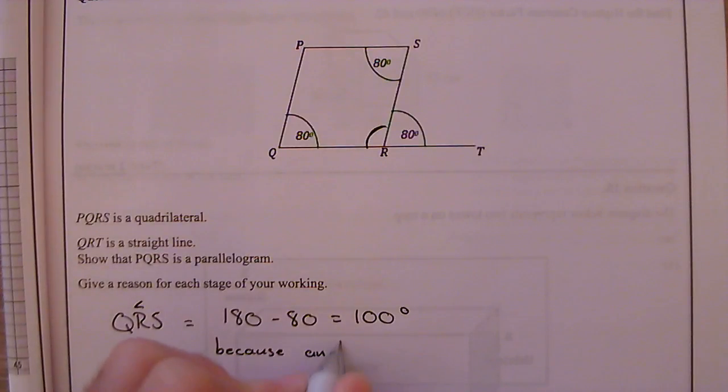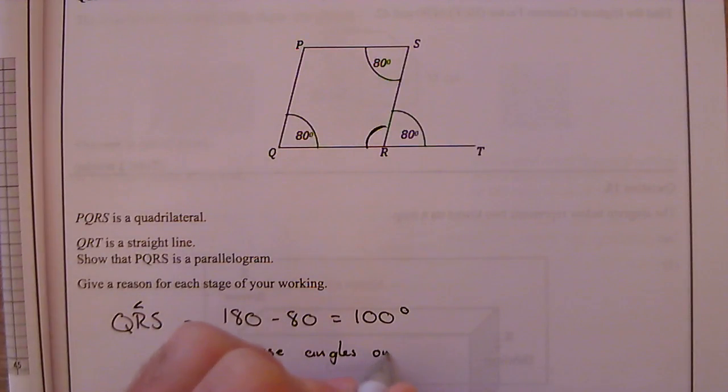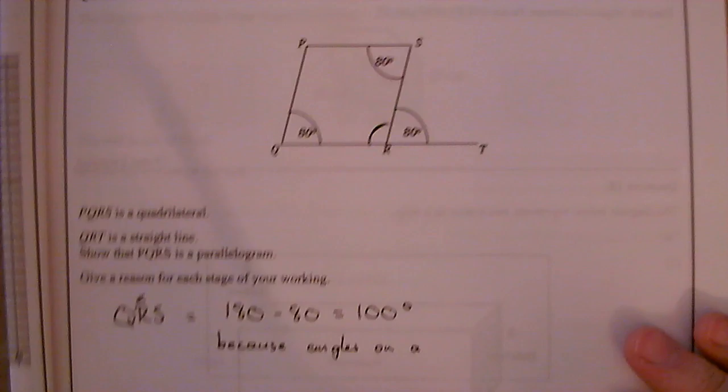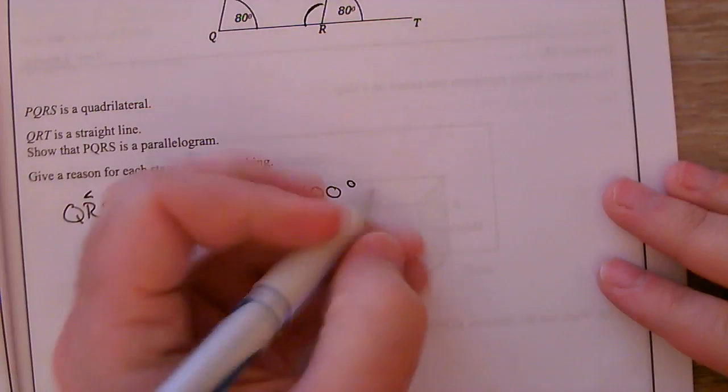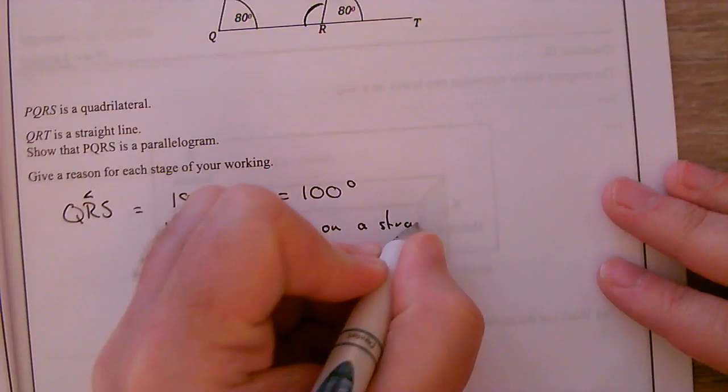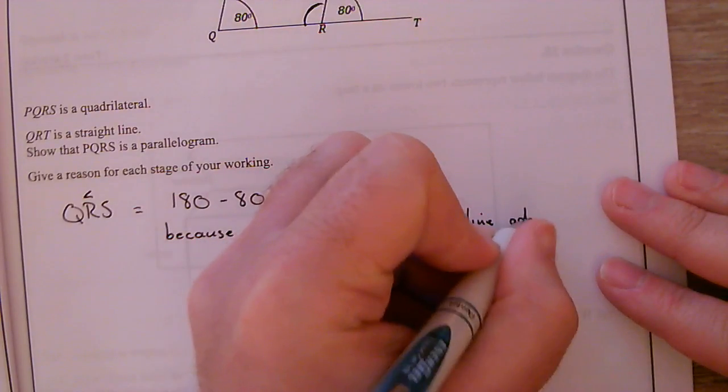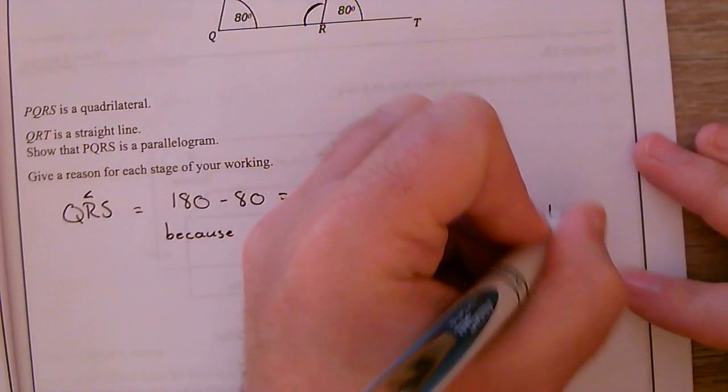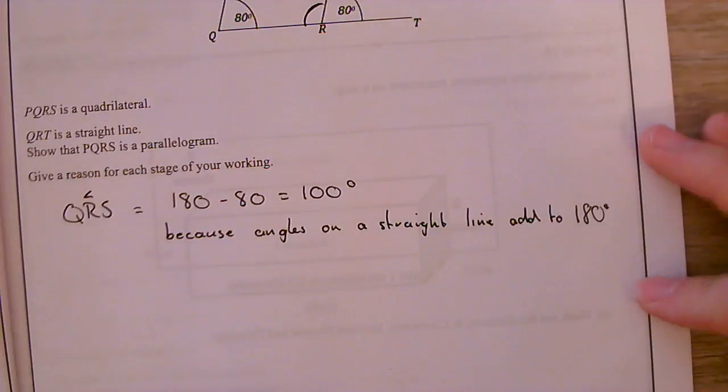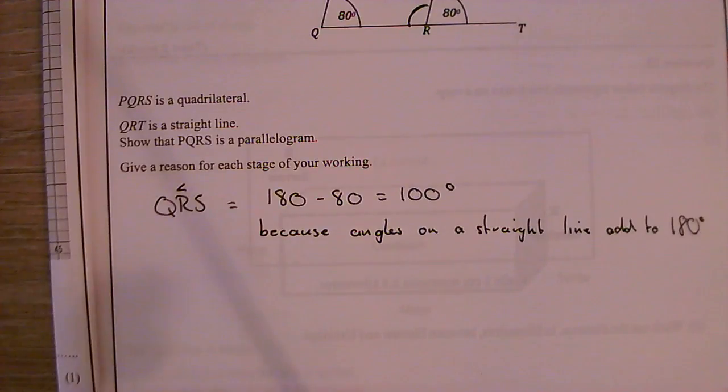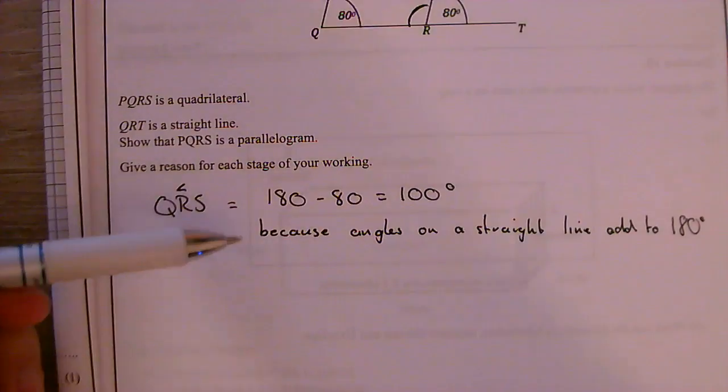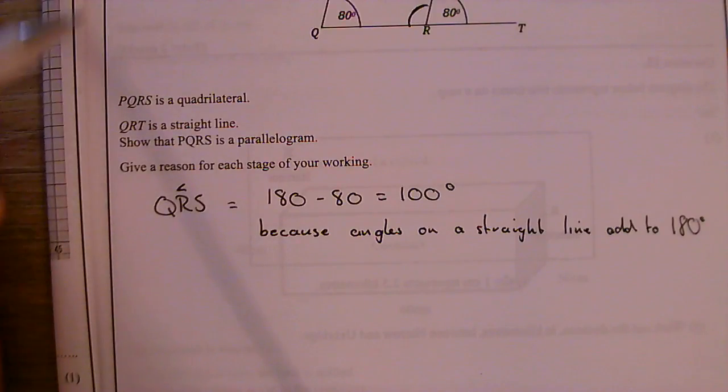Because angles on a straight line add to 180 degrees. OK, so there's a reason for each stage of working. So hence I've put that reason right there. It's really clear, it's nice and obvious.